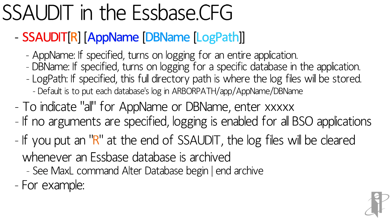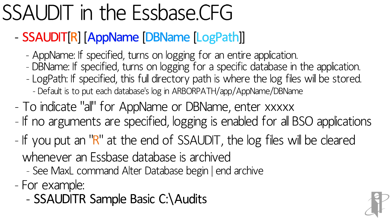For example, if I wanted to back up the Sample Basic database and put the logs into the C:\audits directory, and I wanted it to blank out that log file pair whenever I ended the archive for Sample Basic, I would say: SS Audit R space Sample space Basic space C:\audits.